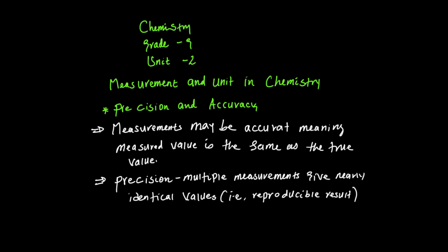Chemistry grade 9, unit 2: measurement and units in chemistry. Let's revise the previous lessons before discussing today's lesson. In the previous lesson, we discussed measurement and uncertainty, the SI prefix, which denotes the amount of SI units commonly known as the metric system. We also discussed factors, prefix symbols, and decimal examples.